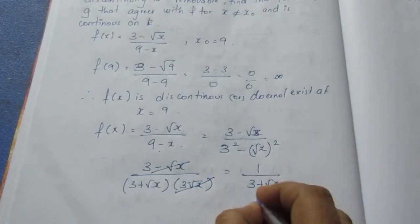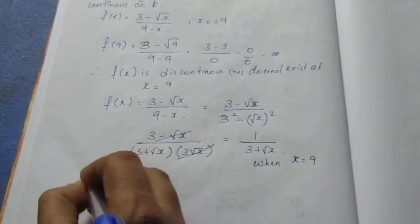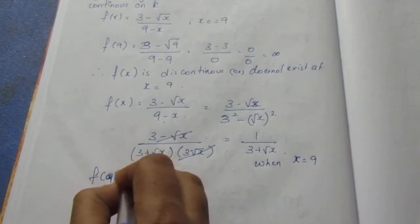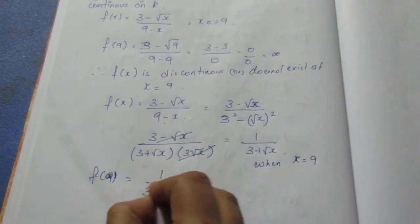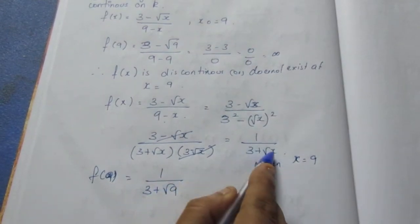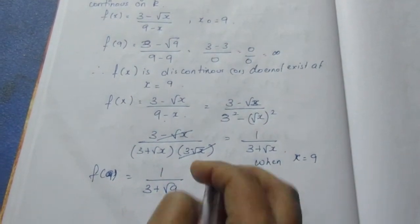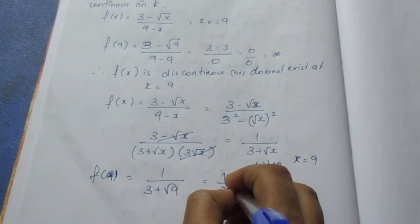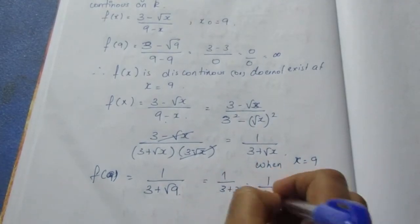When x is equal to 9, we substitute: f of 9 is equal to 1 by (3 plus root 9). Substituting 9, we get 1 by (3 plus 3), which is equal to 1 by 6.